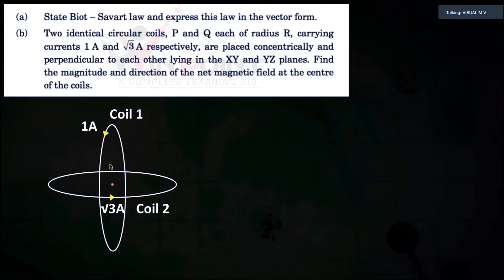We need to apply the thumb rule to find the direction, because it is a coil. Imagine holding the coil where the encircling fingers indicate the direction of current. For coil one, the encircling fingers are in this direction, so the thumb points to the right — that gives B1. For coil two, the thumb points upward — that gives B2 in the upward direction.